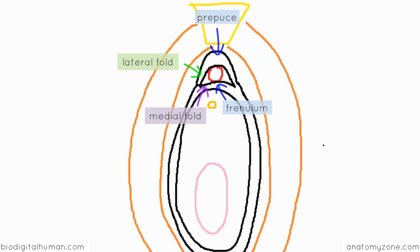So the body of the clitoris extends forward anteriorly from the glans clitoris and it's deep to the prepuce. It's underneath the hood.